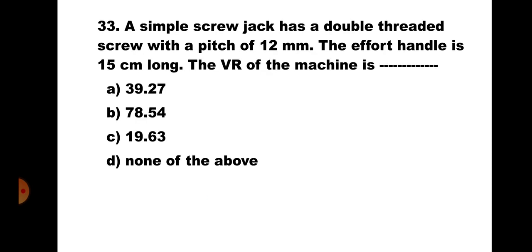Question number 33: A simple screw jack has a double-threaded screw with a pitch of 12 mm. The effort handle is 15 cm long. The VR is: A) 39.27, B) 78.54, C) 19.63, D) none of the above. Formula: VR = 2πL / (n × p), where L = 150 mm, n = 2 (double thread), p = 12 mm. VR = (2π × 150) / (2 × 12) = 942.48/24 ≈ 39.27. The correct answer is A) 39.27.